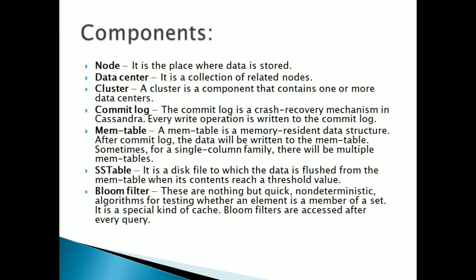Cassandra is composed of several components: a node, a data center, a cluster, a commit log, a memory table, an SS table, and a bloom filter. A node is the place where data is stored. A data center is a collection of related nodes. A cluster contains one or more data centers. A commit log is a crash recovery mechanism — whenever a write operation is done, it is recorded in the commit log.